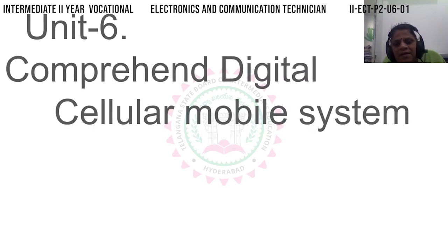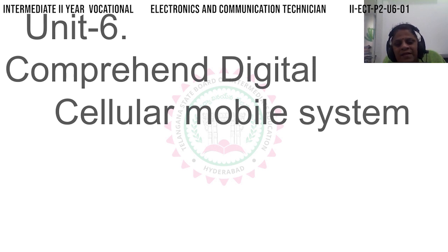Unit 6: Comparing Digital Cellular Mobile Systems. We will compare analog and digital systems. There are 1G, 2G, 3G, 4G generations. We will cover differences in data and commands, protocols and information, and advantages and disadvantages.